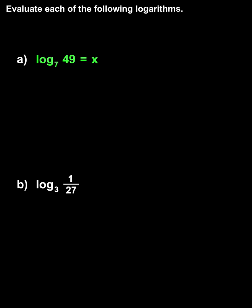Notice that we now have an equation written in logarithmic form, so let's convert it to exponential form. Remember that the base of the log represents the base of the power, the right side of the equation represents the exponent, and the number inside the log represents the result. So we have 7 to the x equals 49.